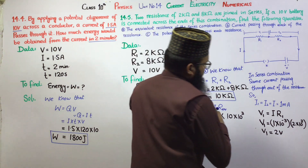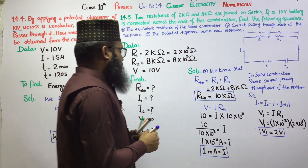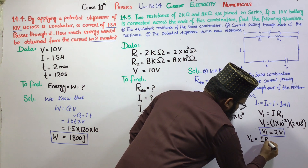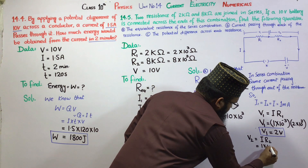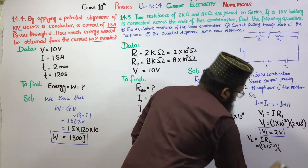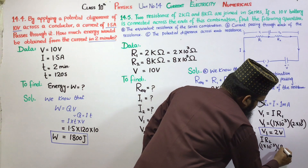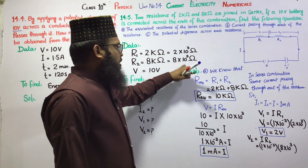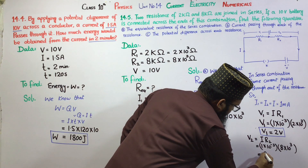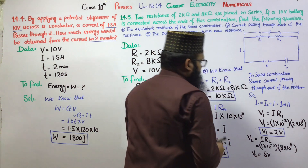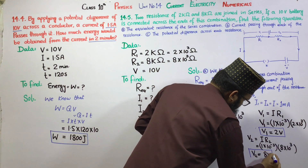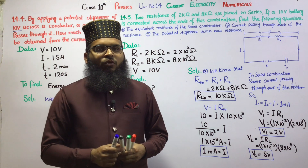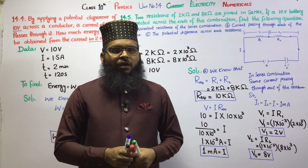In the same way, we find V2. V2 = I × R2 = 1 × 10⁻³ multiplied by 8 kilo-ohm = 8 × 10³ ohm. Multiplying gives V2 = 8 volts. This is the potential difference across resistance number 2. I hope, dear students — take care, Allah hafiz.